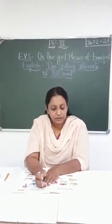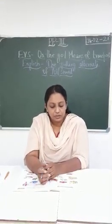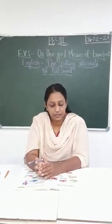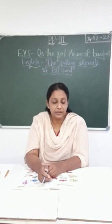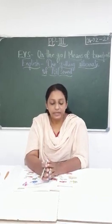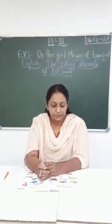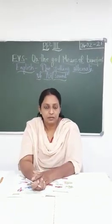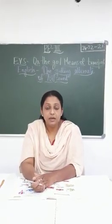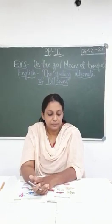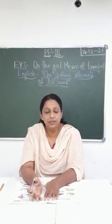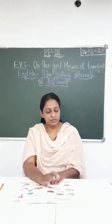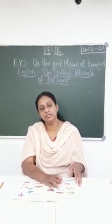So we are going to learn about roadways, waterways, railways, and airways. The vehicles which travel on land — that is roadways and railways — are land transport. Some vehicles of roadways, railways, waterways, and airways are given here. Let's learn them in detail now.